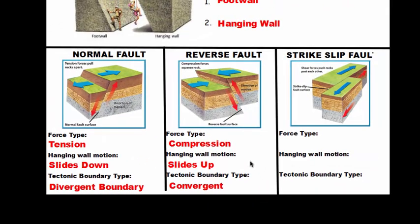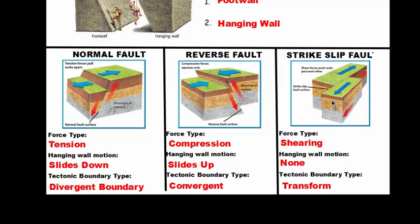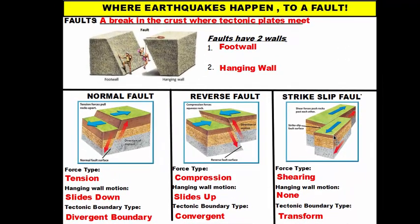The strike-slip fault corresponds to the transform boundary. Since there's no hanging wall on a transform boundary, there's no hanging wall motion — the plates simply slip past one another. The force type is shearing. A good way to remember this is to think of scissor blades: scissors are sometimes called shears, and when they cut, the blades don't close on top of each other but slip past one another, just like the plates in shearing force.